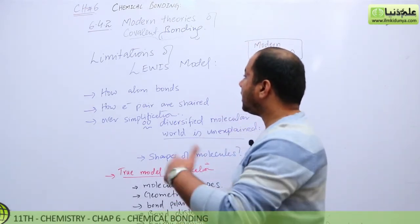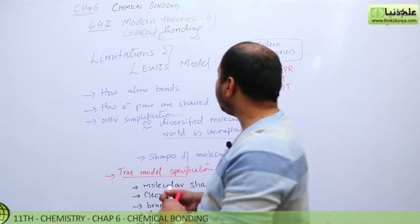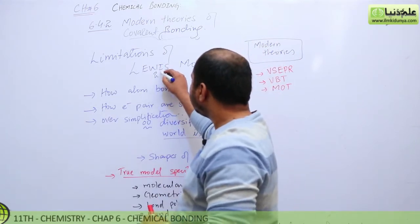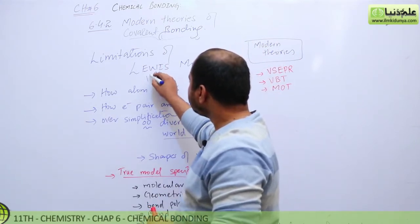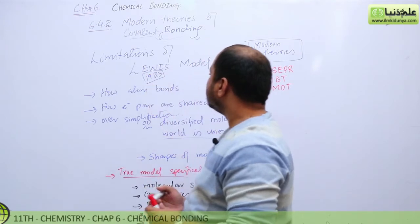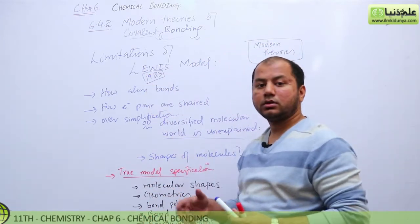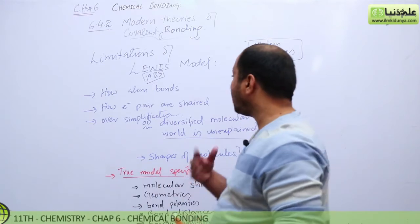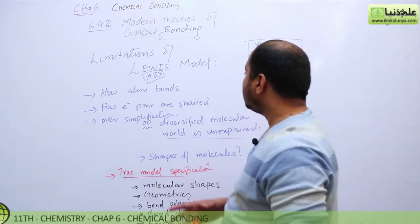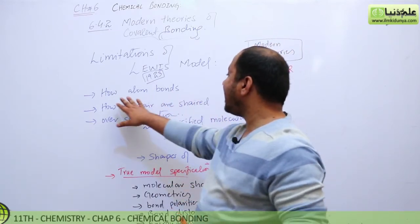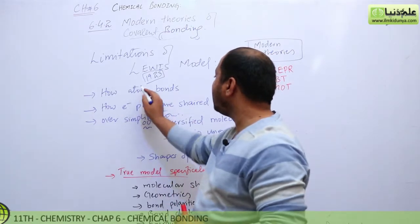But at that time, when Lewis explained the covalent bonding, the bonding between different atoms like the ionic bonding, the coordinate covalent bonding, he has told us how the atom is formed.